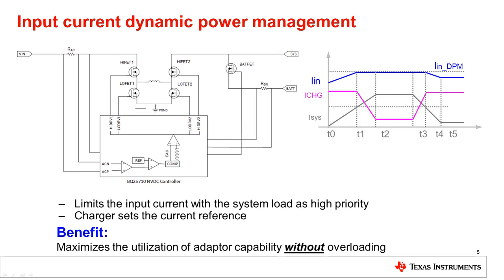The effect of limiting the current through the regulator is that the voltage at the system node will drop slightly, which will reduce the charging current into the battery. As the system current continues to increase, this slight voltage drop at Sys continues to increase as well, resulting in less and less charging current into the battery. But once the system load begins to reduce, the charging current is correspondingly increased until, at T4, the maximum charging current is once again reached. At this point, the INDPM loop is exited.